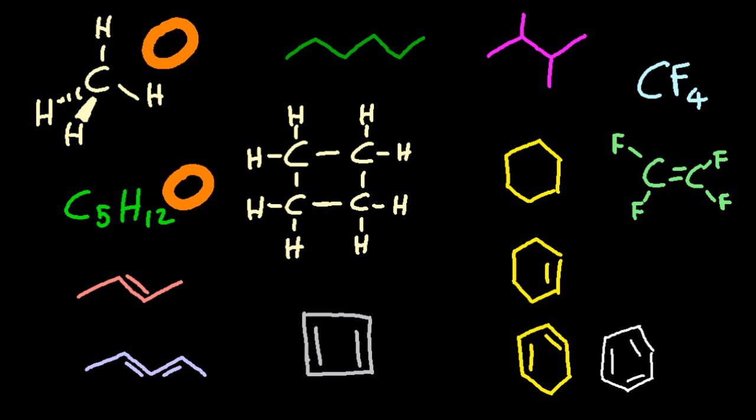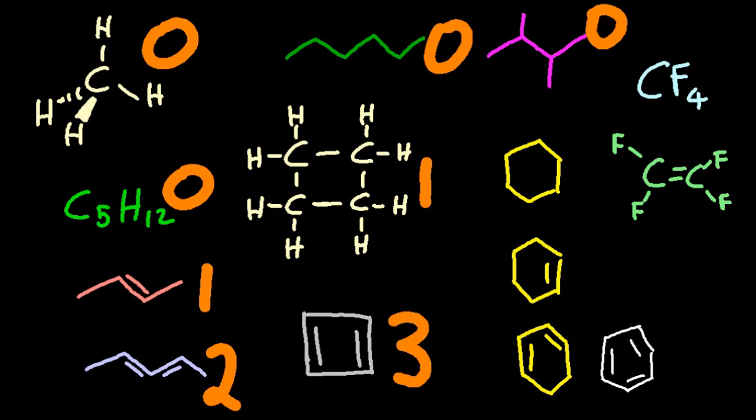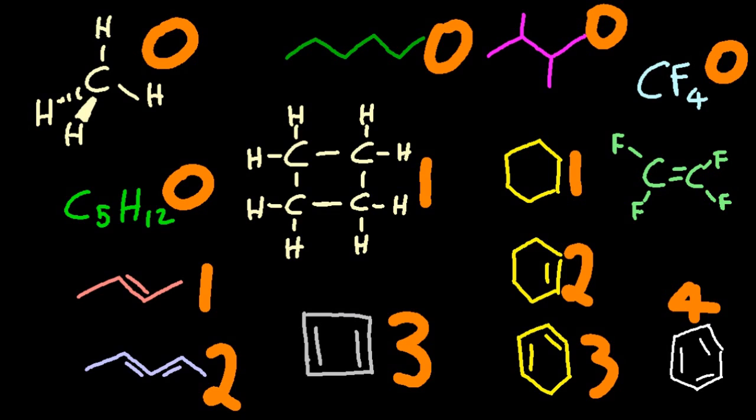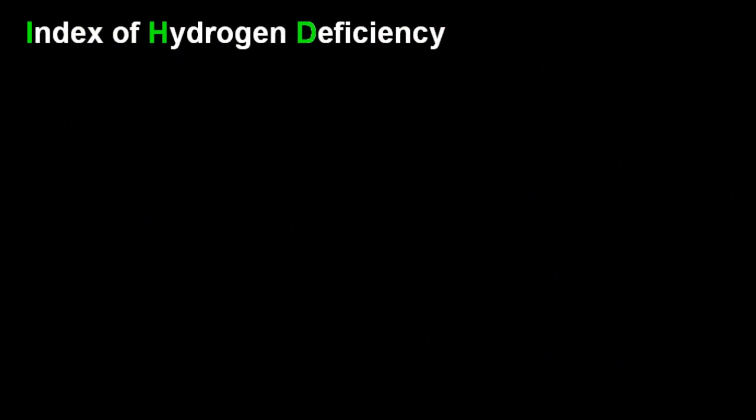So alkanes seem to be zero and you seem to get one point for each double bond. You also seem to get a point for a ring culminating in four points for a ring and three double bonds. Flowings don't seem to matter either and when I say double bonds I mean carbon carbon double bonds in that case.